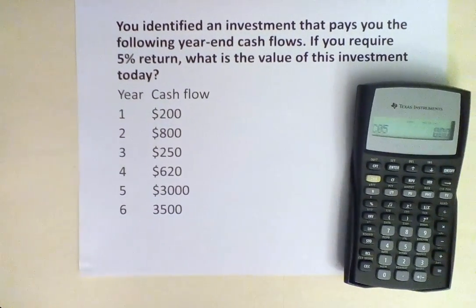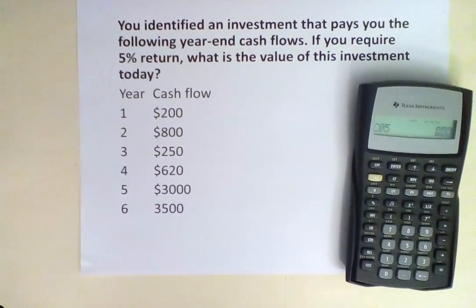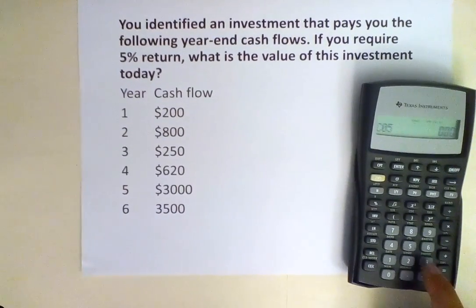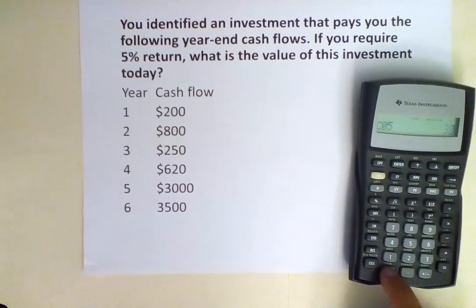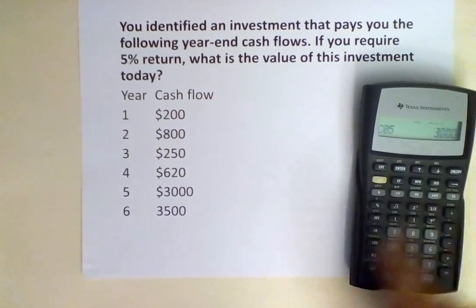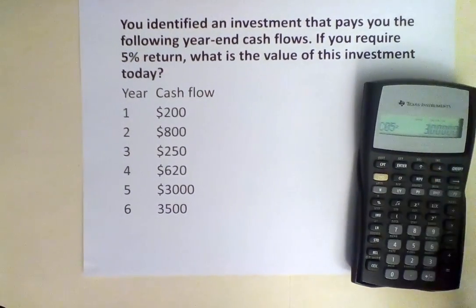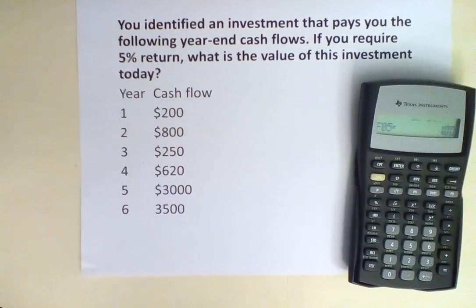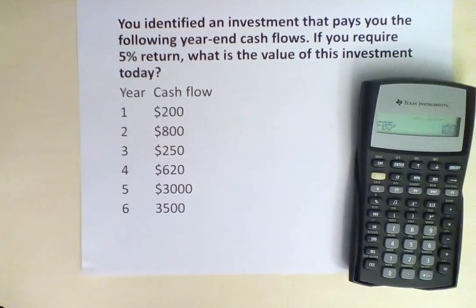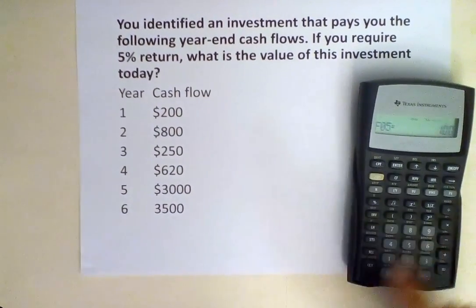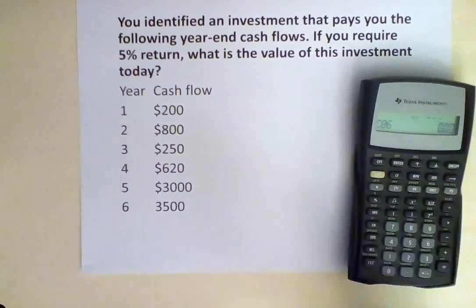Hit the down arrow. C05 is cash flow at year 5, and we are receiving $3,000, so we input $3,000. Hit enter. Down arrow — we are receiving that $3,000 only one time, so we keep it at 1.